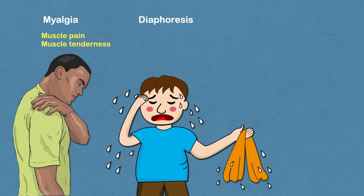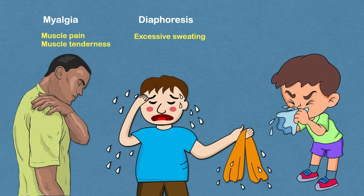Metformin can cause myalgia, which means you can have muscle pain and muscle tenderness. You can also experience diaphoresis or excessive sweating, and rhinitis or inflamed runny nose or congestion.